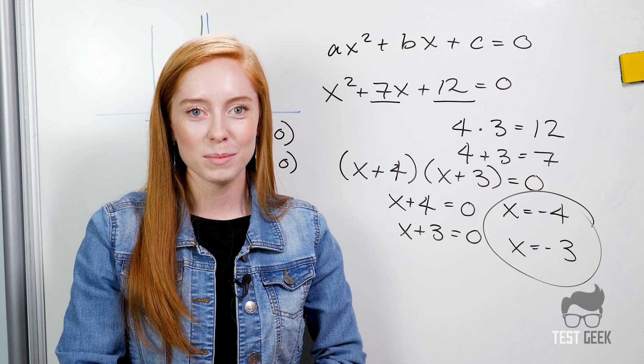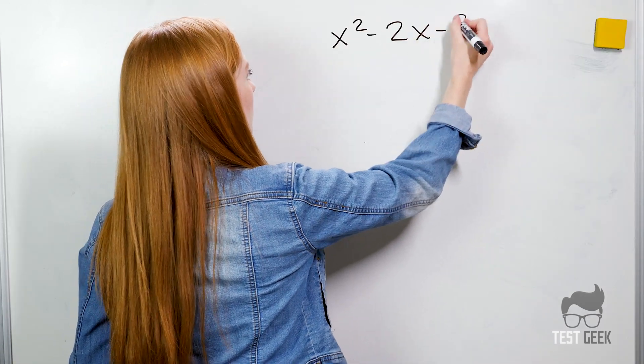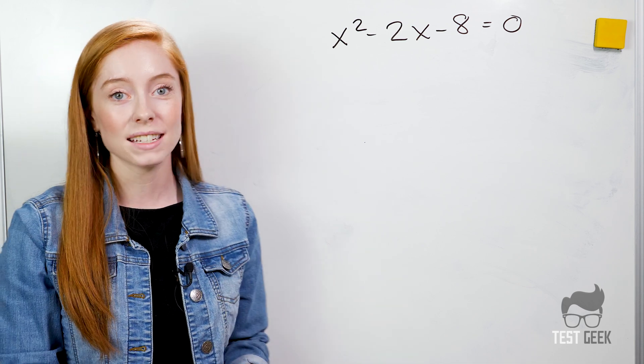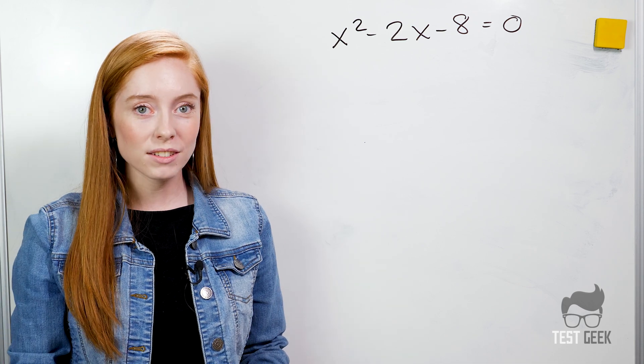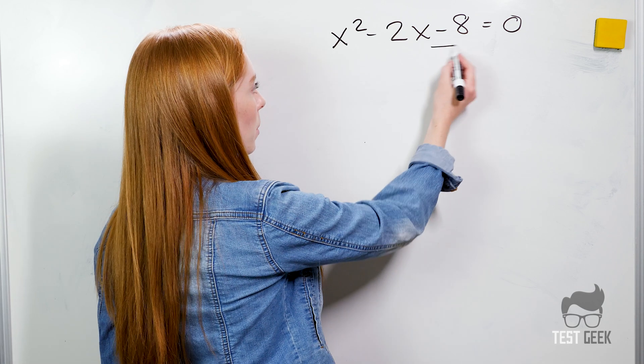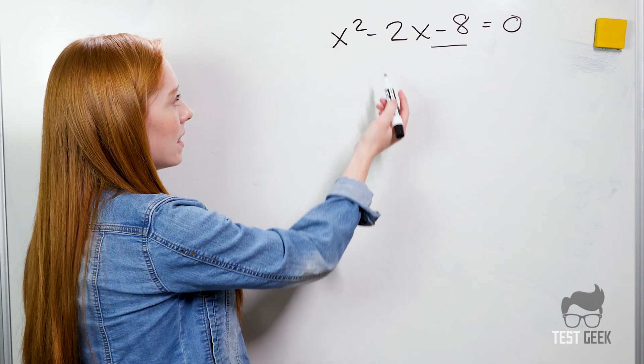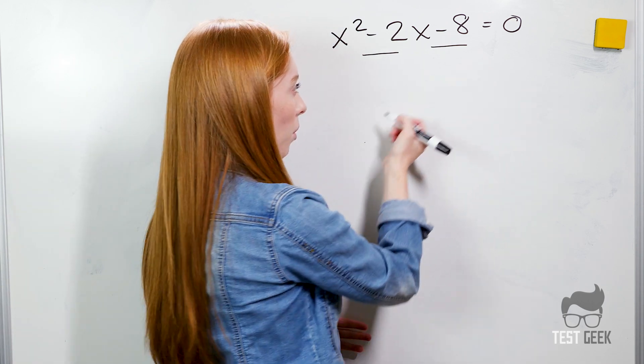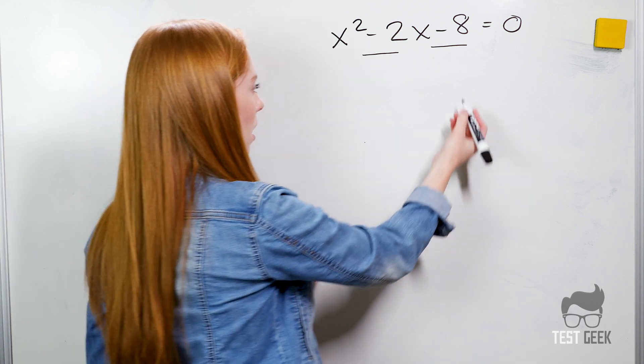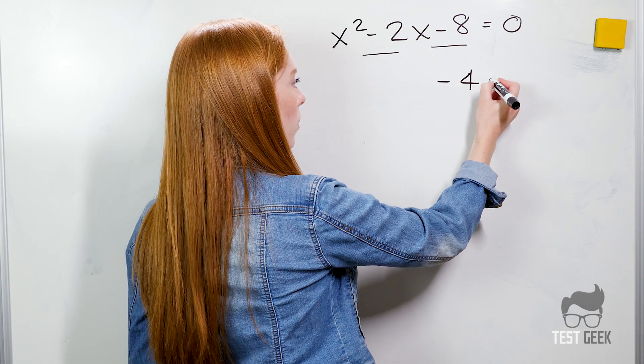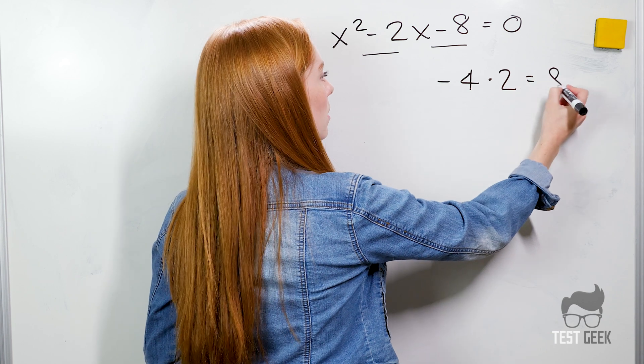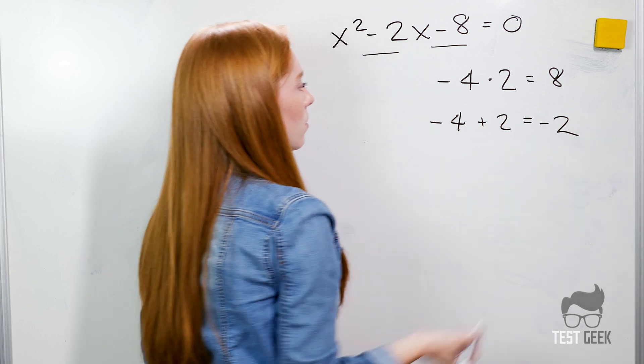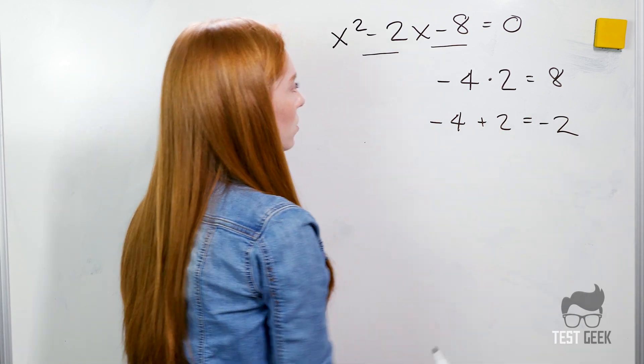Now let's take a look at some practice problems. What are the two solutions for x squared minus 2x minus 8 equals 0? So the first thing we have to do is factor. We're looking for two numbers that multiply to give us negative 8 and then add up to give us negative 2. Maybe we start with 4 and 2. So maybe negative 4 times 2, well that would equal negative 8. And negative 4 plus 2 that equals negative 2. So we have found our two numbers which are negative 4 and 2.